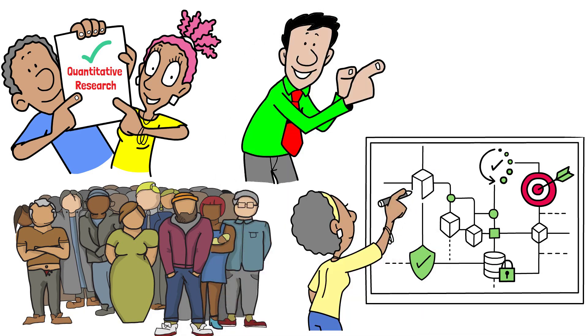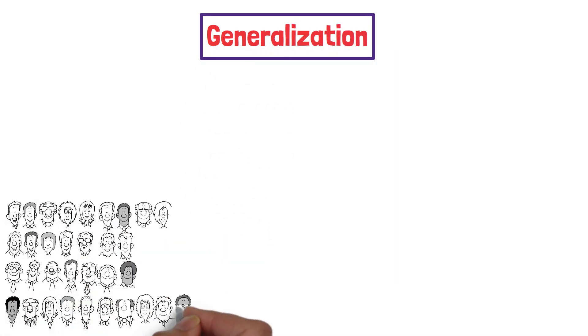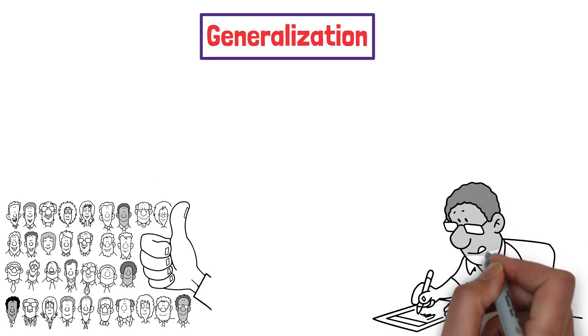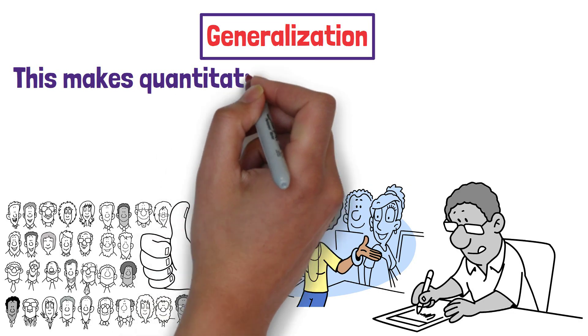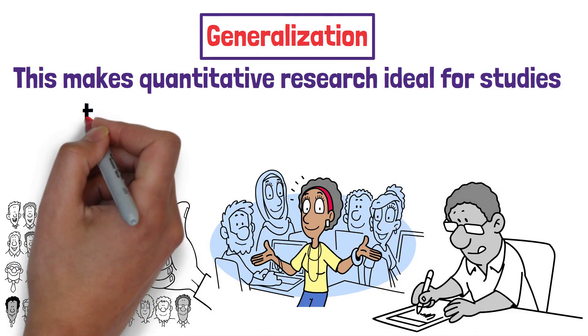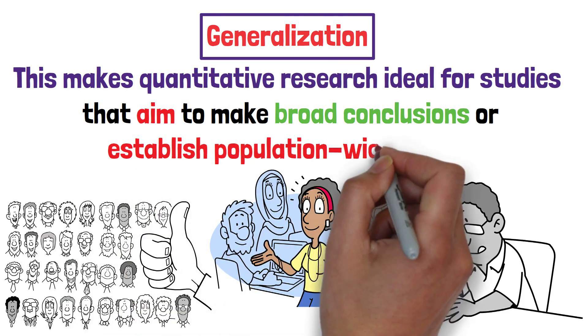Now let's look at four strengths of quantitative research. First, generalisation. By collecting data from a large number of participants, researchers can apply the findings to a broader population, especially when the sample is representative. This makes quantitative research ideal for studies that aim to make broad conclusions or establish population-wide trends.